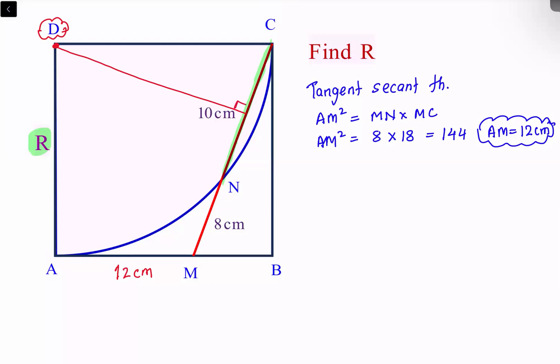So let's name this as P. We know that CP equals PN. Now CN is 10 centimeters, so CP will be 5 centimeters.